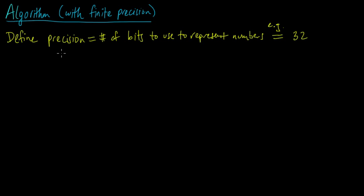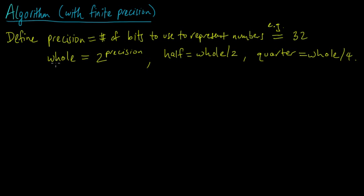So we define precision to be that, and we'll define certain quantities. Let me define whole to be 2 to the precision, and let's define half to be whole divided by 2, or in other words 2 to the precision minus 1. And then let's define quarter to be whole divided by 4. So these are going to play certain roles: whole is going to play the role of the number 1.